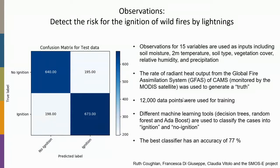One application area is using observations to detect wildfire risk. You take satellite observations and model data worldwide, identify where wildfires have occurred using satellite products, and learn to predict whether wildfires will occur based on extracted information from those datasets. This is a post-processing tool based on observations, and it's a classical application for decision trees.